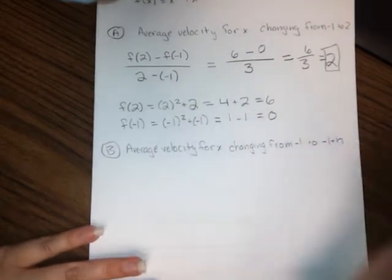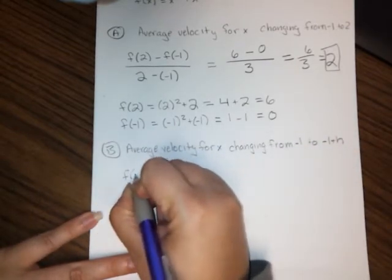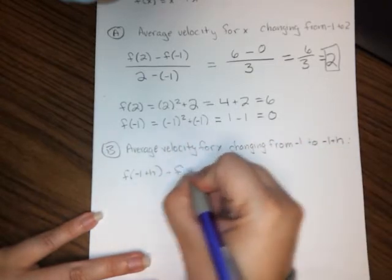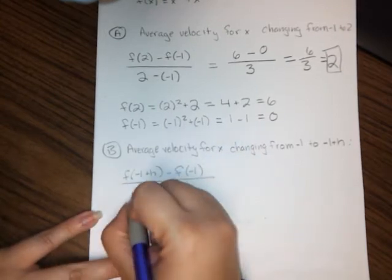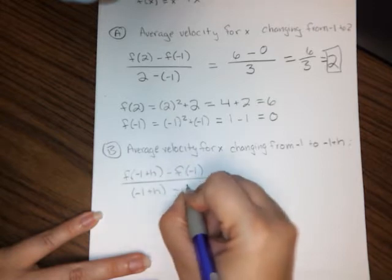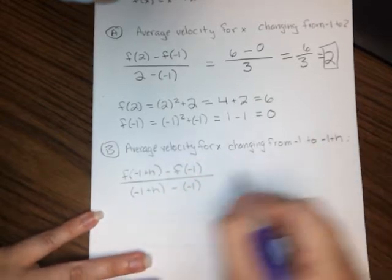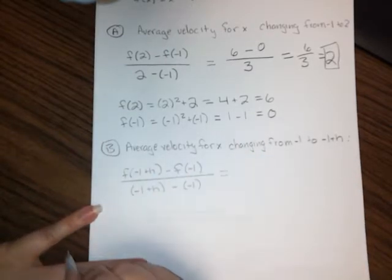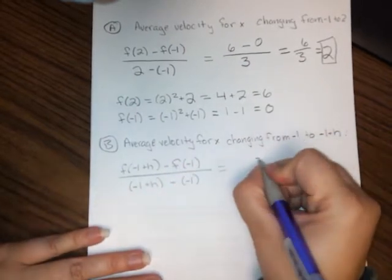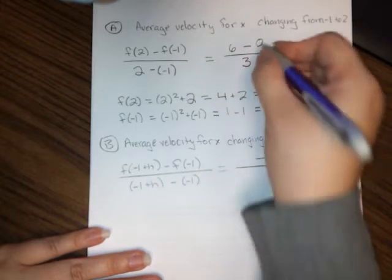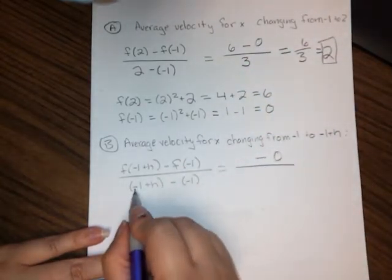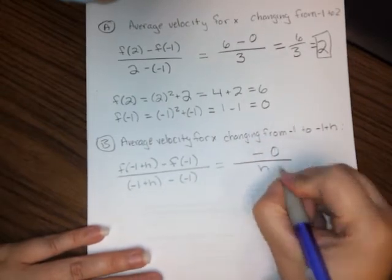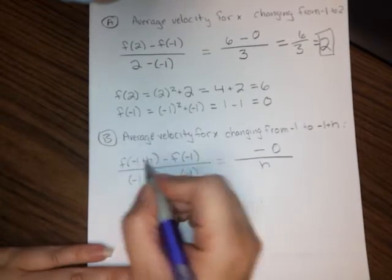So let me set up my formula first, because it's still the same idea. I need f of the end point, so that's f of negative 1 plus h minus f of the beginning point all over the end point minus the beginning point. So I'm just plugging in the values they gave me into this formula here. And then I have to fill in the blanks. Now luckily I have most of what I need here. I've got f of negative 1, so I can actually kind of start filling this in. f of negative 1 was 0, so I can put that there. Negative 1 plus h minus negative 1, so negative 1 plus 1 those are going to cancel. That's just going to leave an h in the denominator. So all I'm missing is this f of negative 1 plus h.